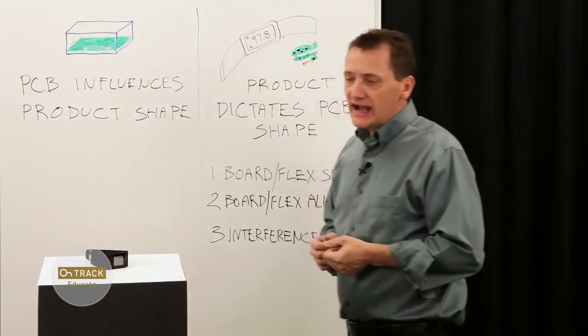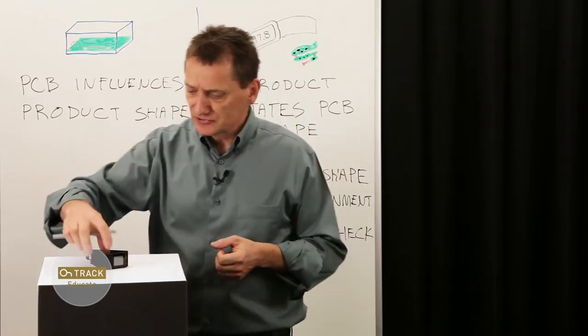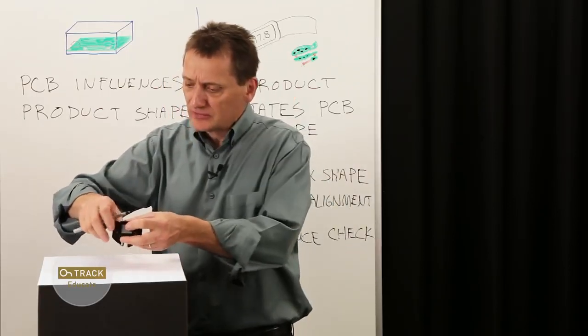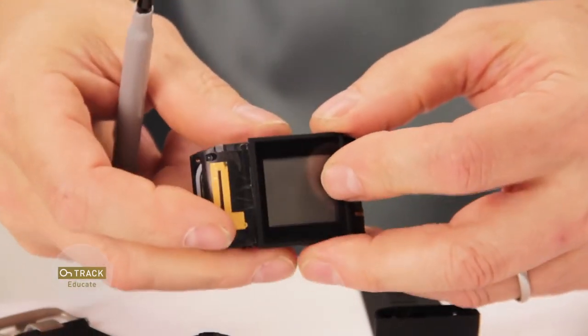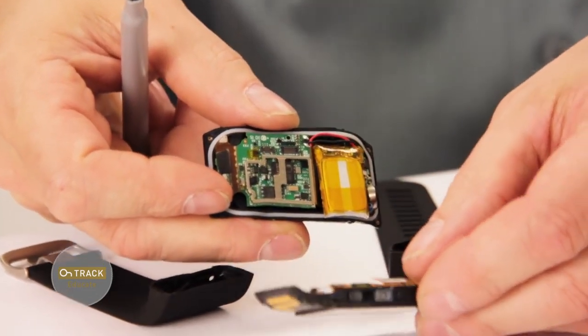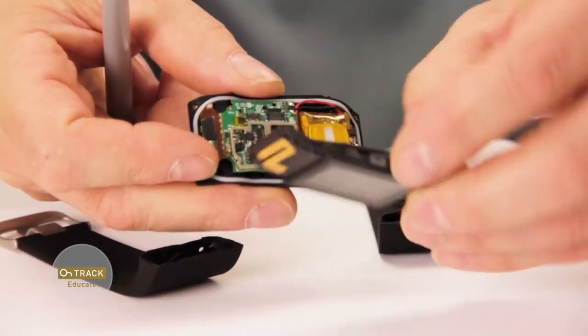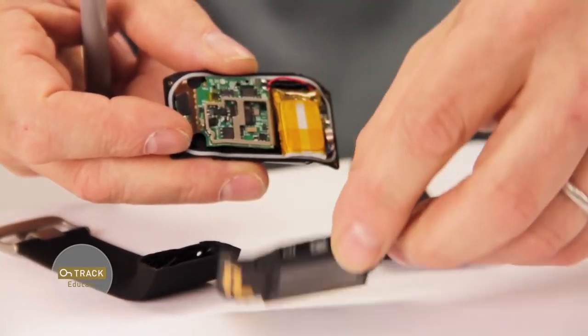So let's take a look at a real example. Here I have a fitness tracker that I will take apart. To show you the complexity of this, this is a very powerful device, and here is the bottom or top enclosure piece, and that has an LCD display.